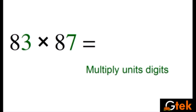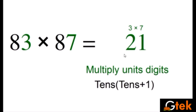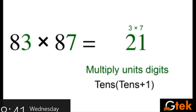So multiply units digit. My unit digits are 3 and 7. So 3 into 7 is 21 and I am going to take my tenth place.